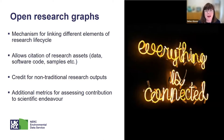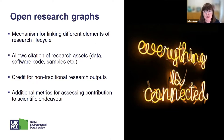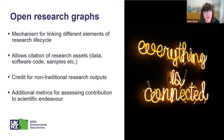There's another strength of persistent identifiers: linking your research assets together through Open Research Graphs. Open Research Graphs are important because they're a mechanism for linking different elements of the research life cycle. They allow citation of research assets, automated linking between different assets and the researcher, support credit for non-traditional research outputs, and provide additional metrics for assessing contribution to the scientific endeavor.